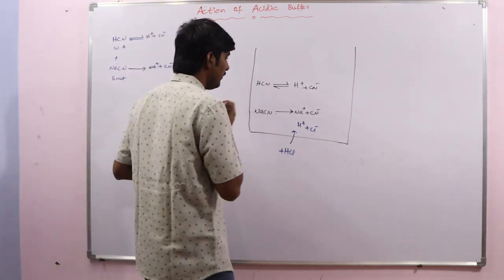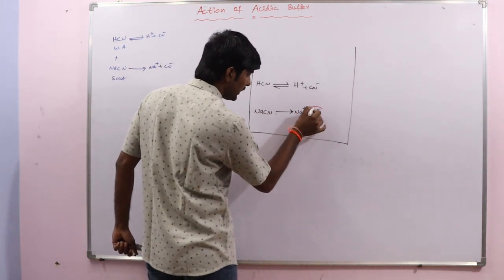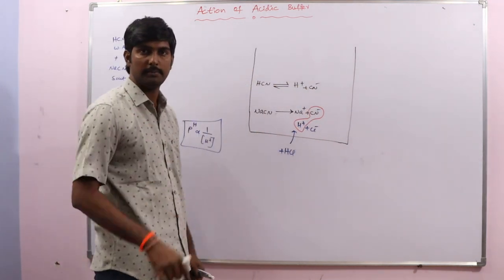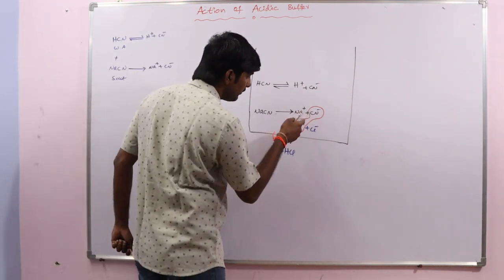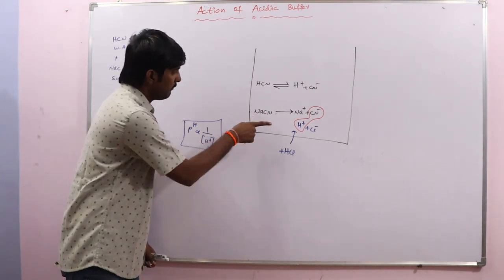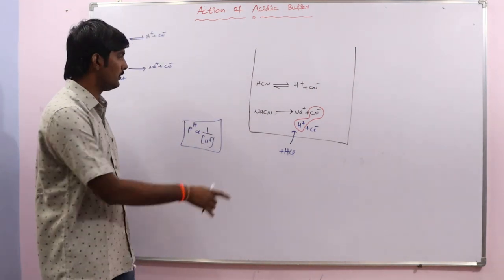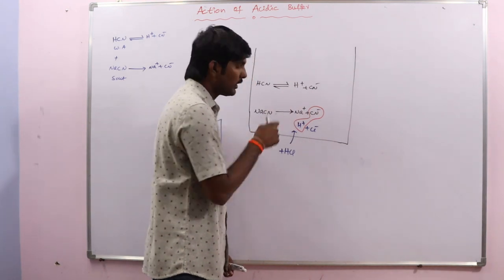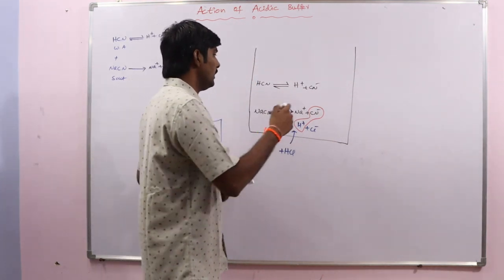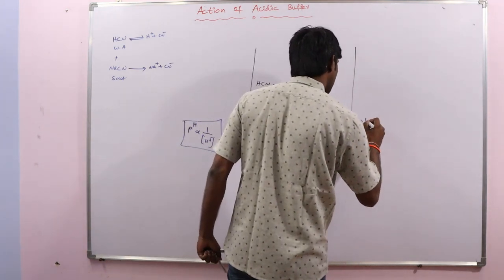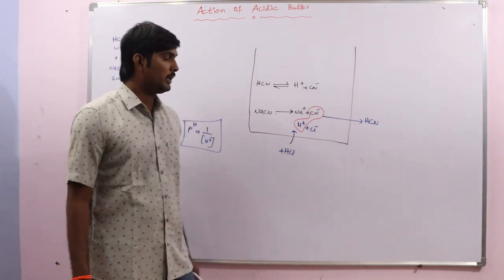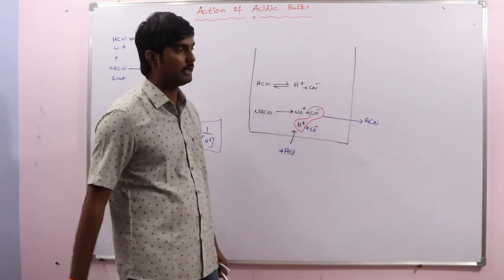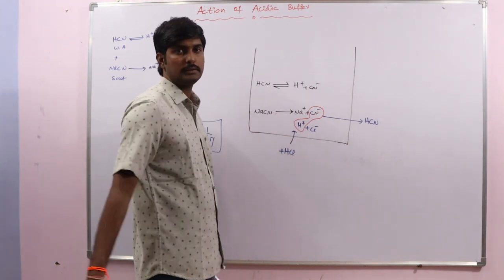But here is what happens: when we add this strong acid, the formed H⁺ ions immediately combine with the CN⁻ ion already present in the buffer solution. Remember that whenever H⁺ ions are free, only then will they change the pH. But here, the added H⁺ ions immediately combine with the anion present in the solution, forming HCN. So most of the H⁺ ions are consumed.